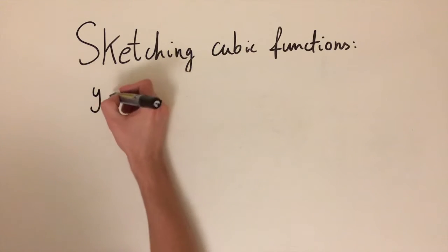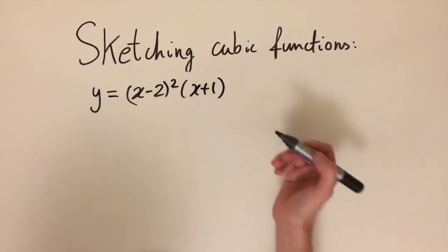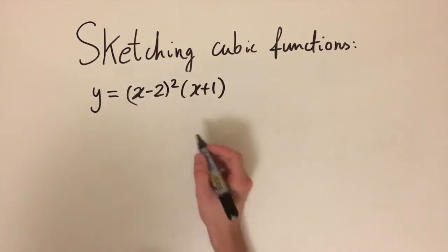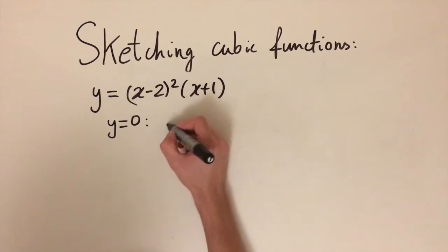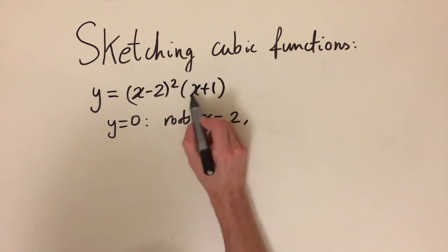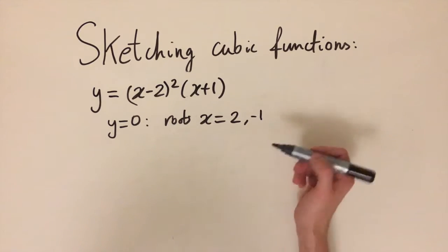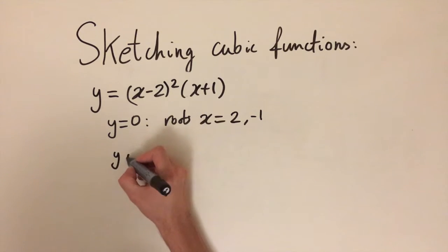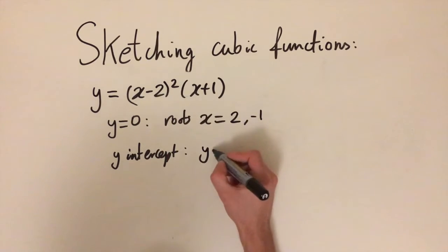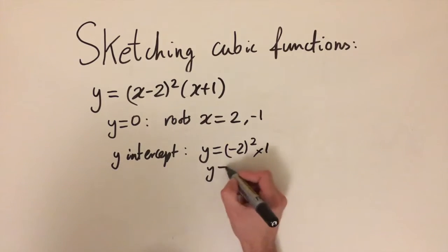Now for a harder example: y equals x minus two squared, times x plus one. This is still a cubic, but we have x minus two appearing twice, which will change the shape slightly. Setting y equal to zero gives roots at x equals two and x equals minus one — so only two roots. The y-intercept is found by substituting x equals zero: y equals minus two squared times one, which equals four.